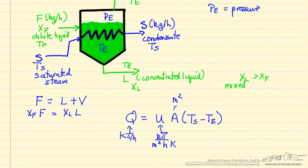There are more efficient ways to carry out evaporation. For example, a triple effect evaporator, to have three of these in series.